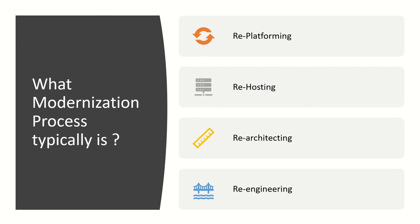What does the mainframe modernization process typically look like? There are different options: you can go for re-platforming, re-hosting, re-architecting, or re-engineering. Remember the example of reconstructing a home — with a 40-year-old house you have all these options. The exact same thing happens in technology modernization — we are trying to do the same thing with legacy mainframe systems.